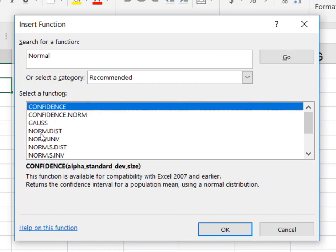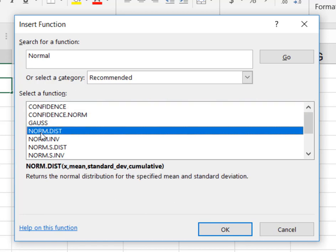And what I want is right here. I want normal distribution. Remember, by applying the central limit theorem to this sample proportion, it allows me to use normal distribution. So I'm going to highlight norm.dist, and I'm going to hit OK.